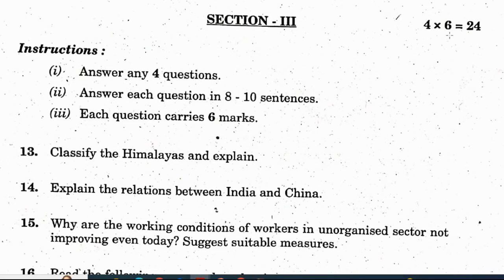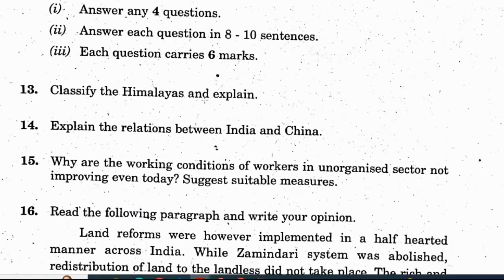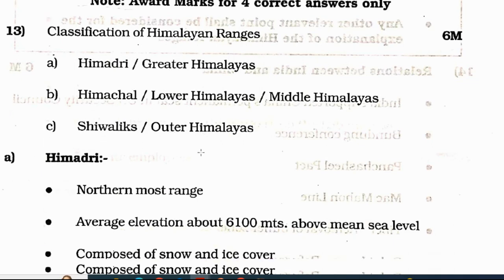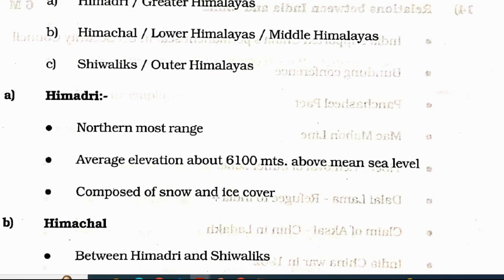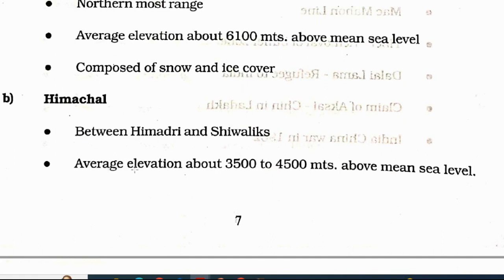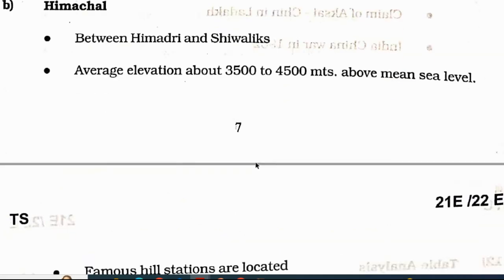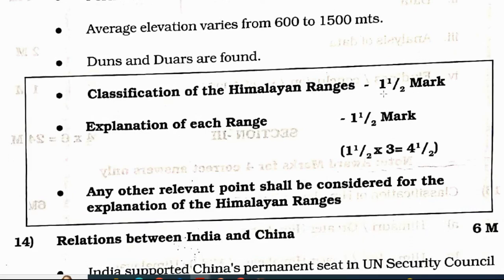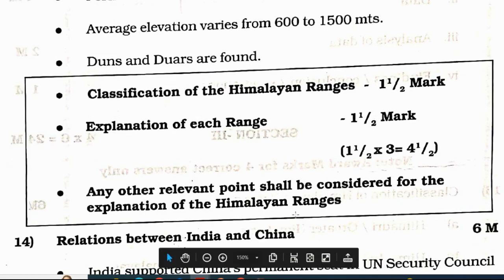Last section in Part A: 4 questions, each carries 6 marks, total 24 marks. We have choice in this section — out of 6 questions, we need to write any 4. Question 13: classify the Himalayas and explain. Classification: Himadri or Great Himalayas; Himachal or Lower/Middle Himalayas; Shivalik or Outer Himalayas. Himadri is the northernmost range with average elevation of about 6,100 meters above mean sea level, composed of snow and ice. Himachal lies between Himadri and Shivalik with average elevation 3,500 to 4,500 meters, where famous hill stations are located. Shivalik was formed in the last stage of Himalayan formation with average elevation 600 to 1,500 meters. Classification: 1 mark each; explanation of each range: 1 mark each. Any other relevant points shall be considered. Total 6 marks.